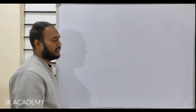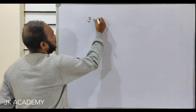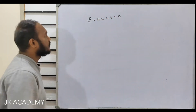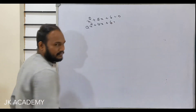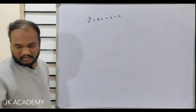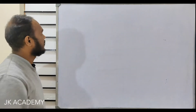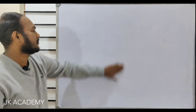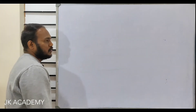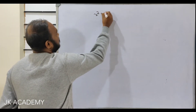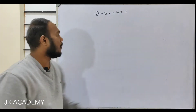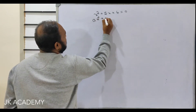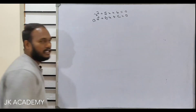Let's start by considering a question on quadratic equations. If I write x squared plus 5x plus 6 equals 0, whenever a question is given on a quadratic equation, always compare this with the general form: ax squared plus bx plus c equals 0.